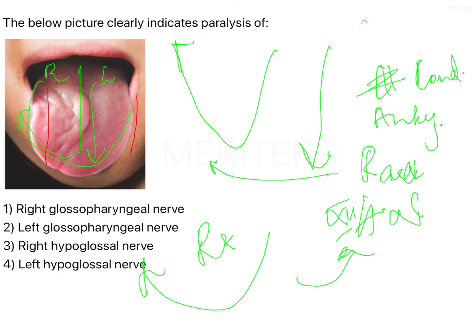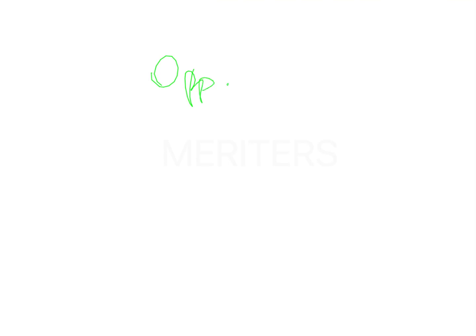Conversely, when you have paralysis of your vagus nerve, the entire uvula is pushed to the opposite side. For the vagus nerve, it is the opposite side. So if my right vagus is paralyzed, the uvula will be pushed to the left side. Why? Because the right side muscles are not working; however, the left side muscles are working and they are pulling the entire uvula towards that side.